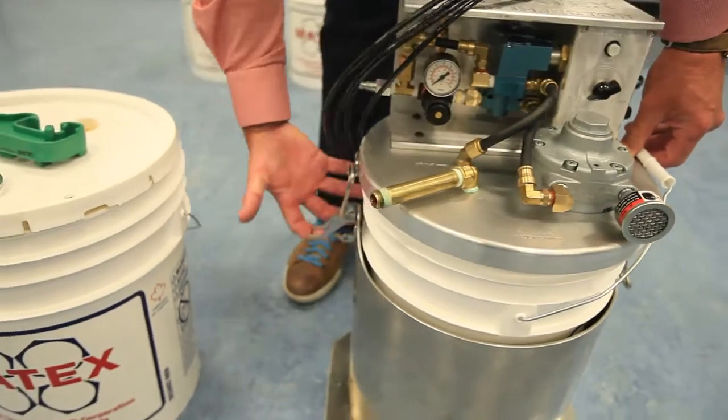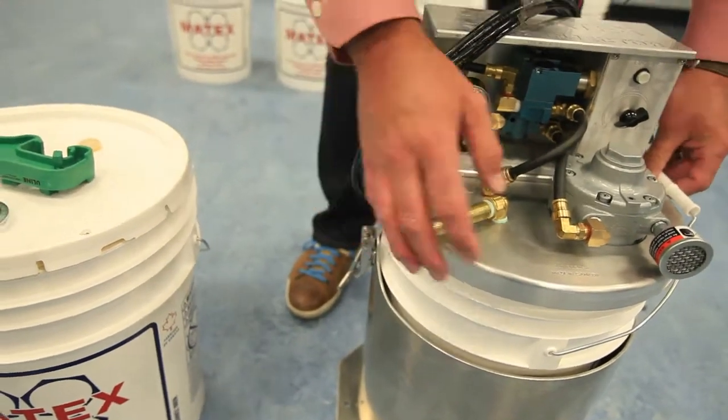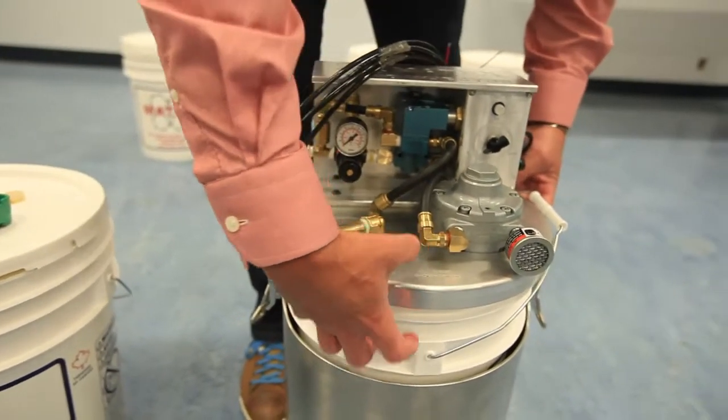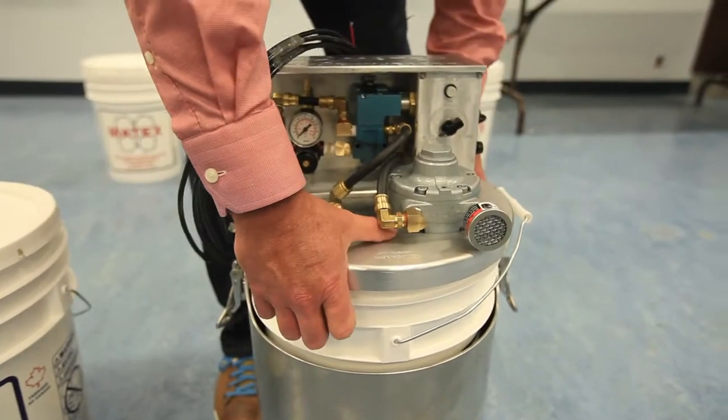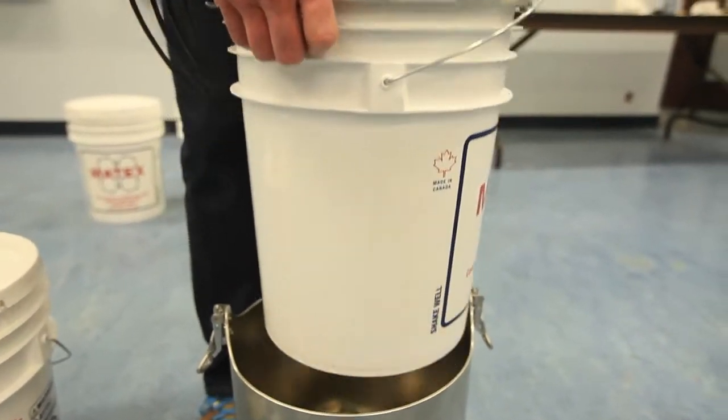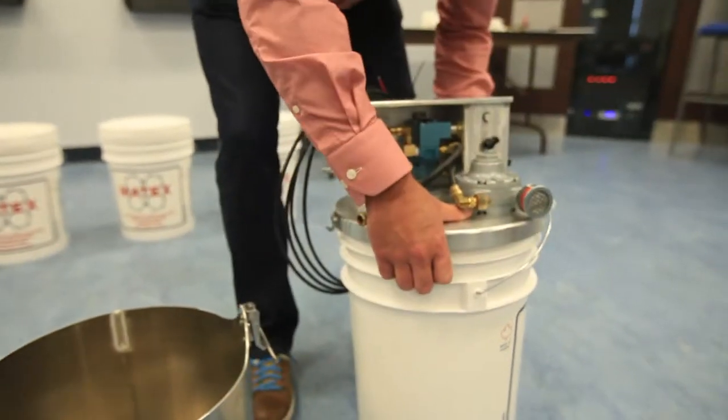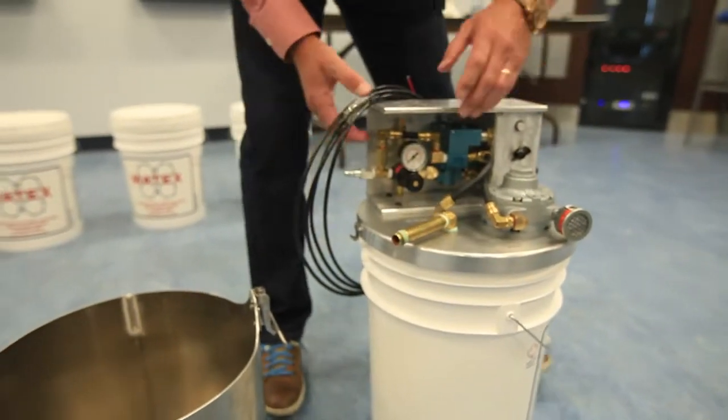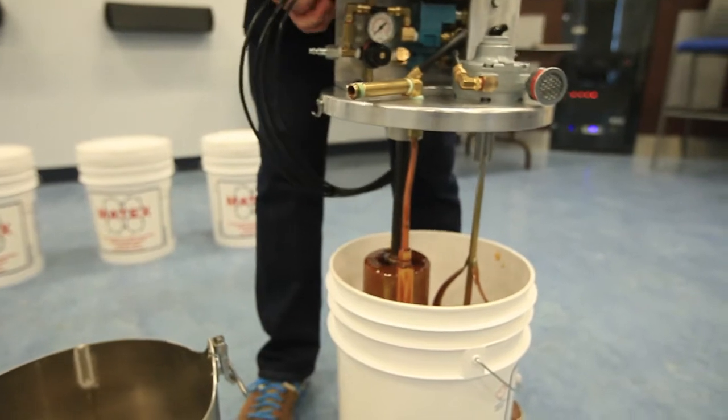Then there's a clip on the other side. We'll unclip this and simply grab the pail right here in one of these lips and lift the whole system out of there. It's taking your pump and your mixing system.